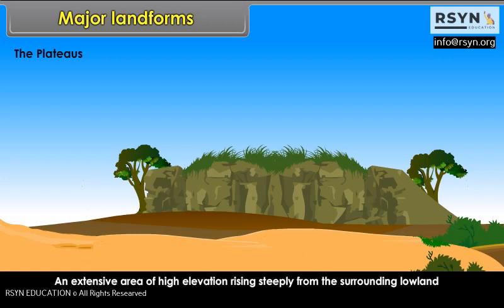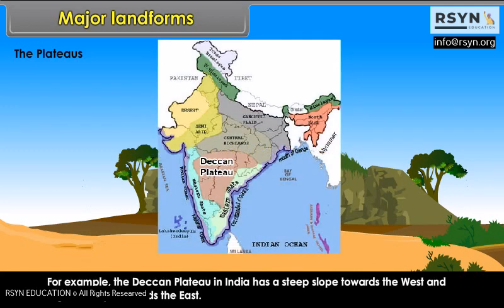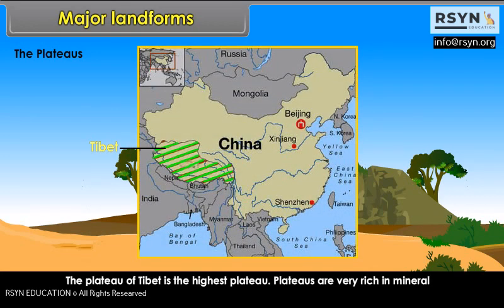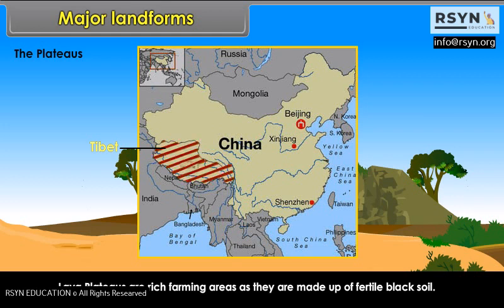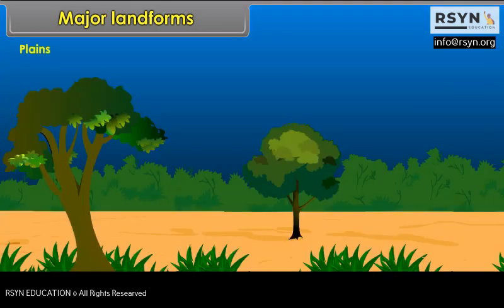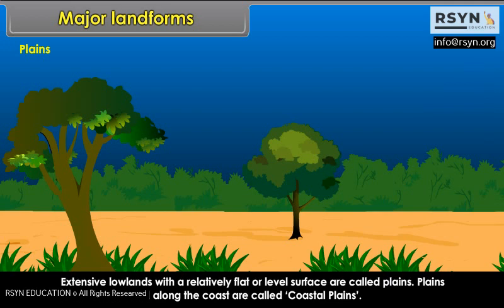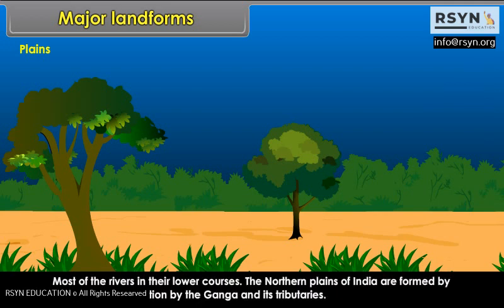An extensive area of high elevation rising steeply from the surrounding low land is a plateau. Some plateaus have steep slopes on one side only and gentler slopes on other sides. For example, the Deccan Plateau in India has a steep slope towards the west and a gentle slope towards the east. The plateau of Tibet is the highest plateau. Plateaus are very rich in mineral deposits. Lava plateaus are rich farming areas as they are made up of fertile black soil. Plains are extensive low lands with a relatively flat or level surface. Plains which are located along the coast are called coastal plains. The northern plains of India are formed by alluvial deposition by the Ganga and its tributaries.